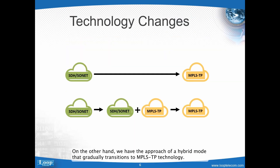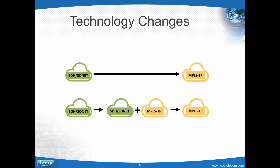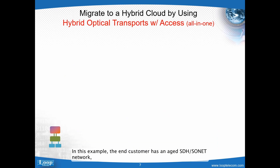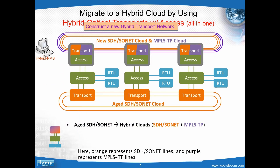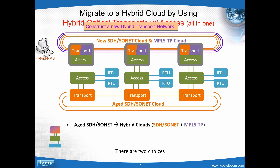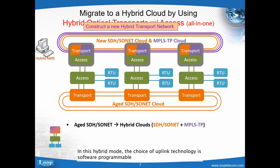On the other hand, we have the approach of a hybrid mode that gradually transitions to MPLSTP technology. In this example, the end customer has an aged SDH Sonet network, and next to it we construct a new hybrid transport network. Here, orange represents SDH Sonet lines and purple represents MPLSTP lines. Hybrid transport means the transport portion has both SDH Sonet and MPLSTP simultaneously. There are two choices — SDH Sonet or MPLSTP — for any traffic coming in from access to transport. In this hybrid mode, the choice of uplink technology is software programmable, which you can redirect at your discretion.